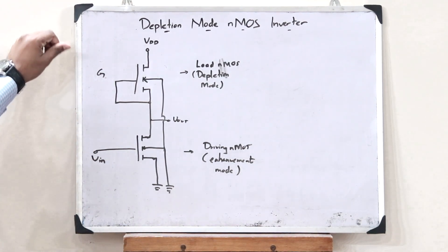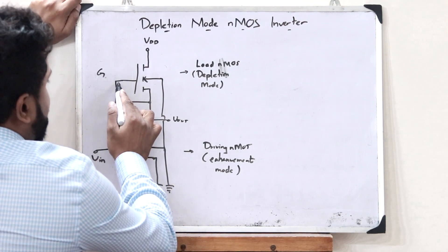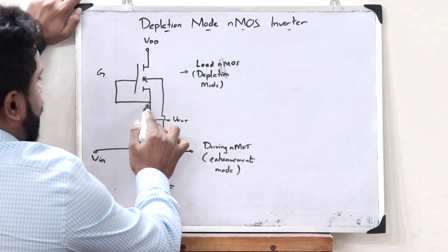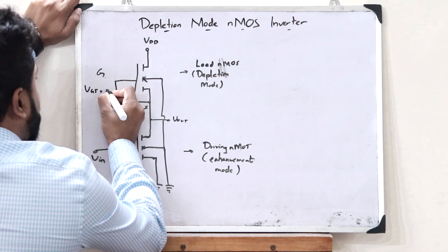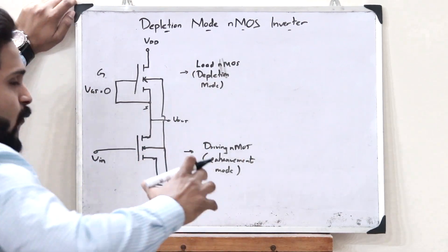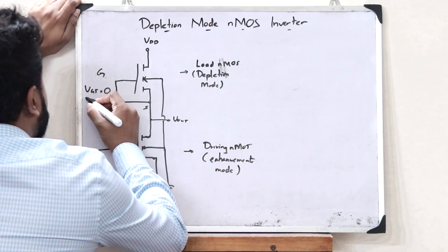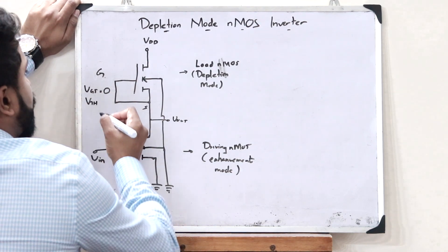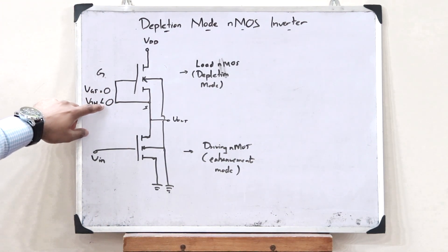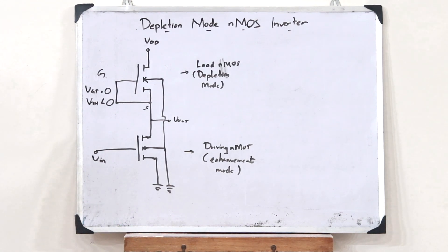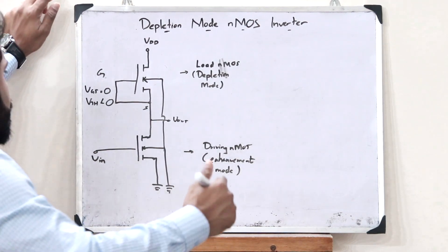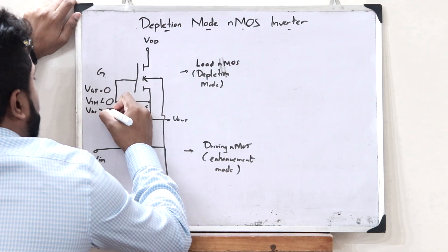Let us see how this works. What we observe is that the particular gate terminal and source terminal are both shorted. So, since the gate and source are shorted, what we observe is that VGS is equal to 0. Now, in the case of an NMOS transistor in the depletion mode, the threshold voltage VTH is negative, so VTH is less than 0. Because VGS is 0 and because VTH is less than 0, this particular transistor will always be in the on condition, because VGS is greater than VTH.